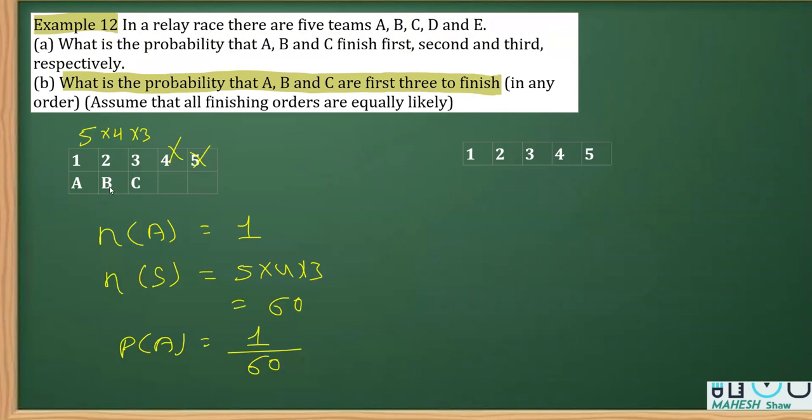Now, different arrangements are possible. For example, we can have A first, B second, C third. Or fixing A first, we can have C second and B third. Fixing B first, we can have A and C occupying the other two places.